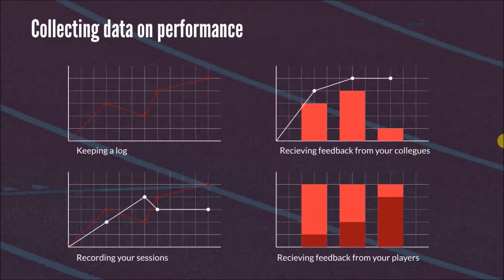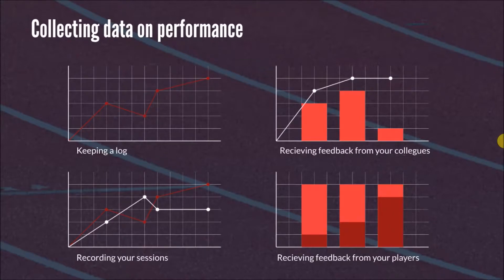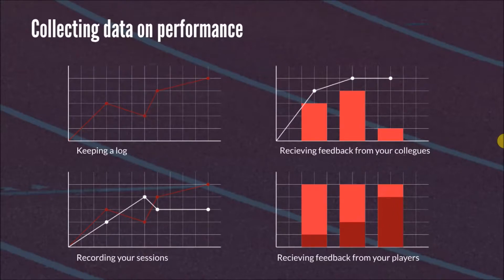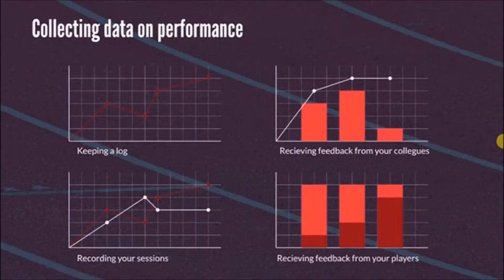How do I collect data on my own performance? First, I keep a log — I write down what went well and what didn't go well. I try, if possible, to record my own sessions and see how I interact with my players and look at situations unfolding and how I dealt with them. It's a process we do a lot on a team basis — recording sessions for the players to review. But it's also important that we record sessions to see how we performed. I also look for feedback from colleagues and other coaches, and finally, I look for feedback from my players.